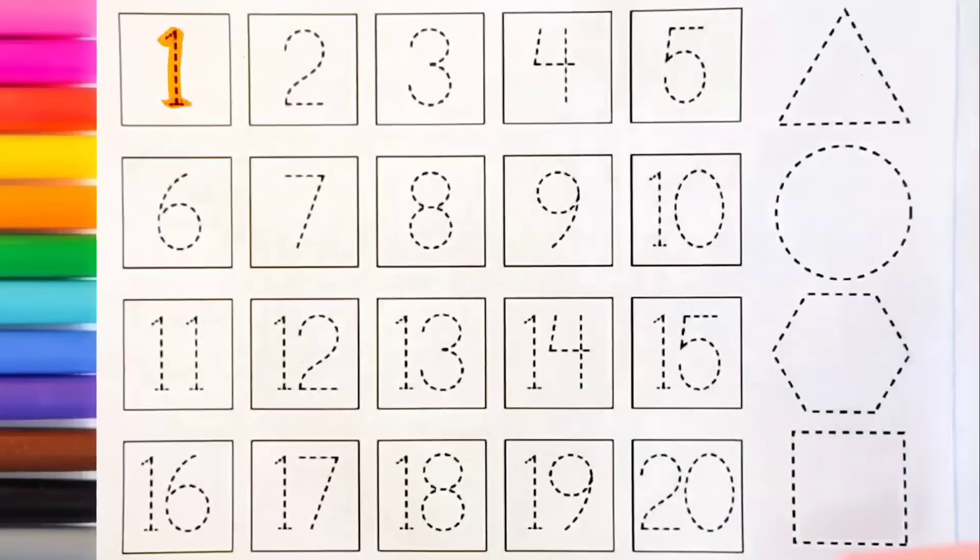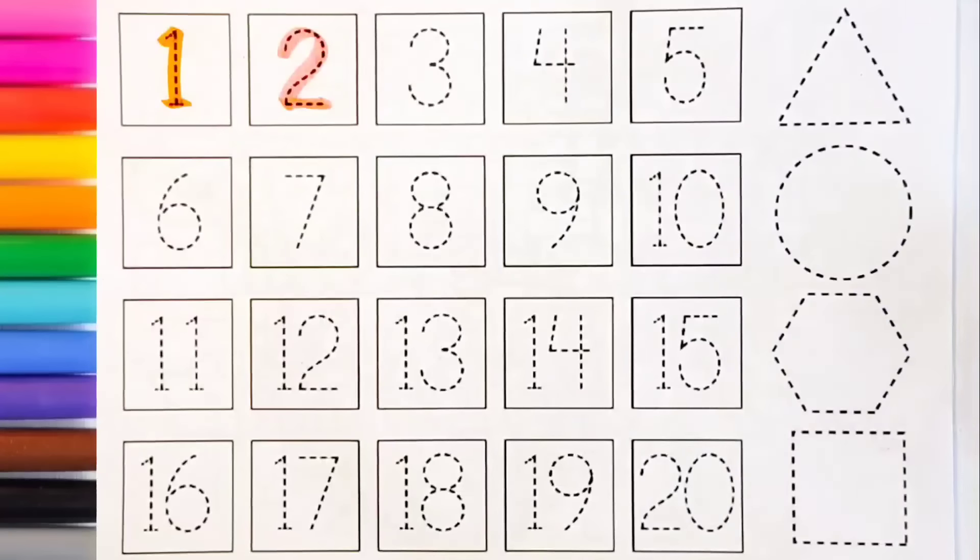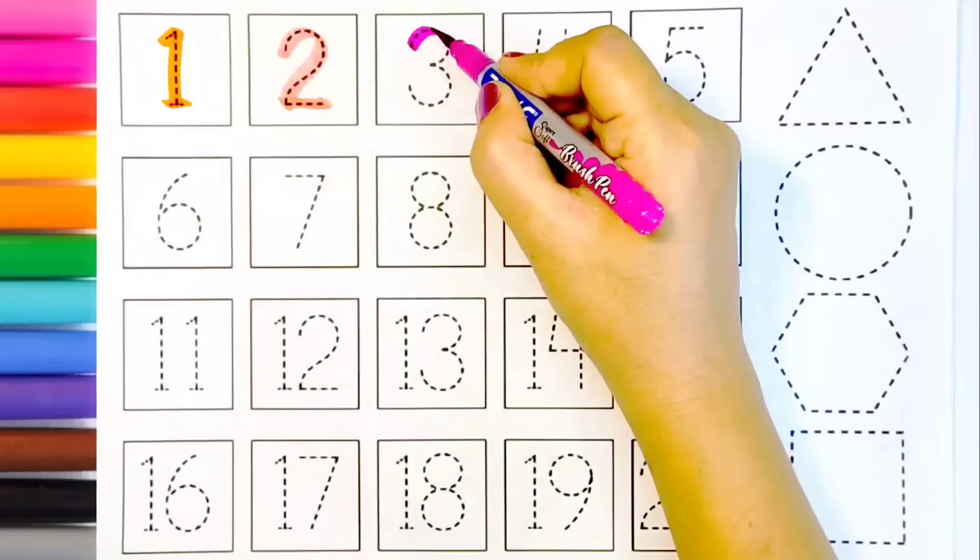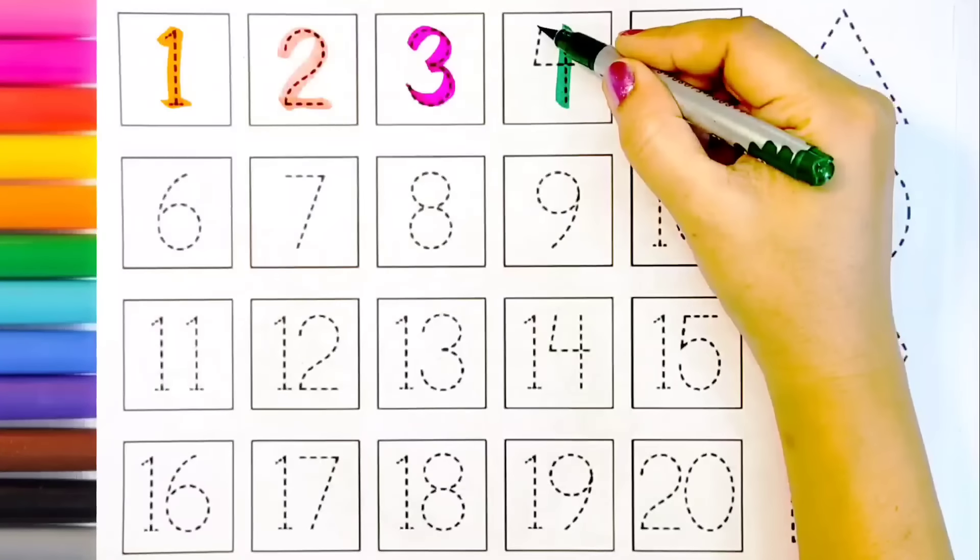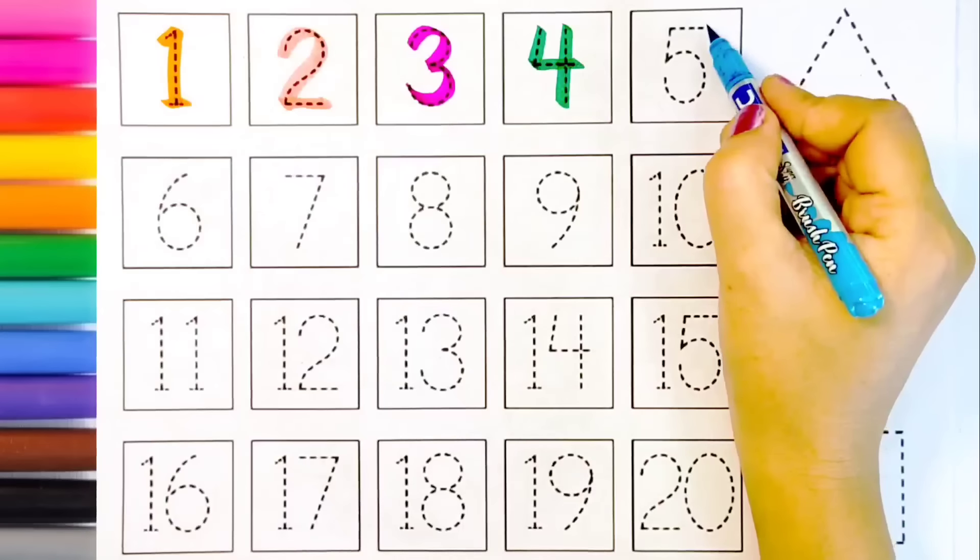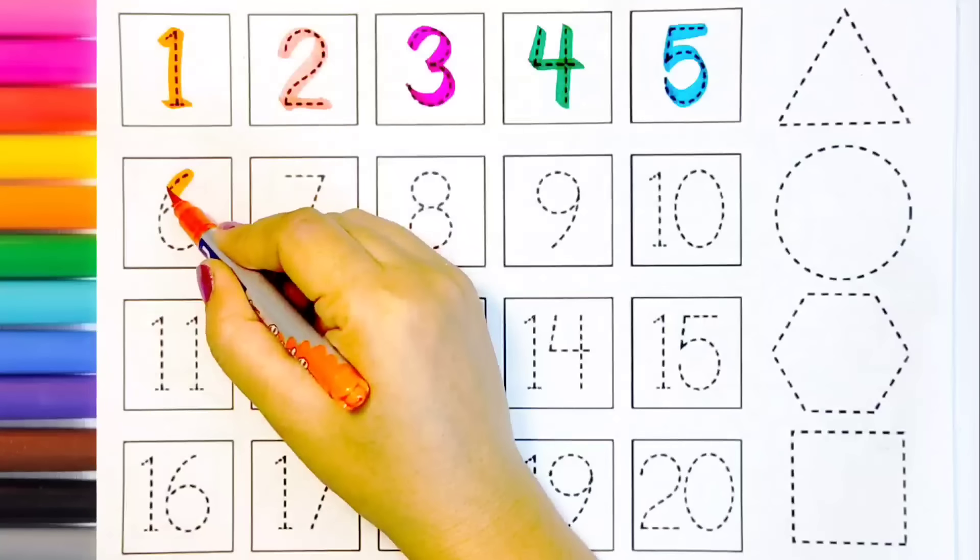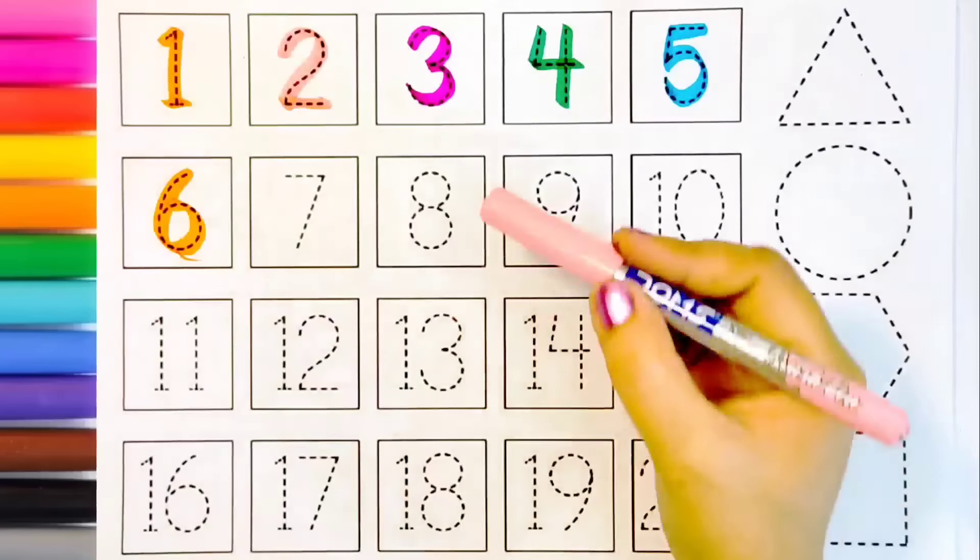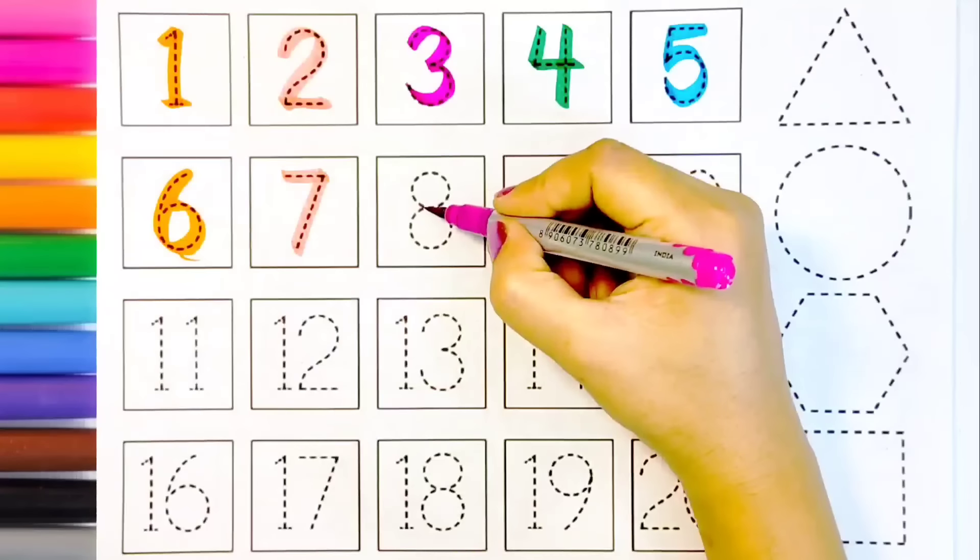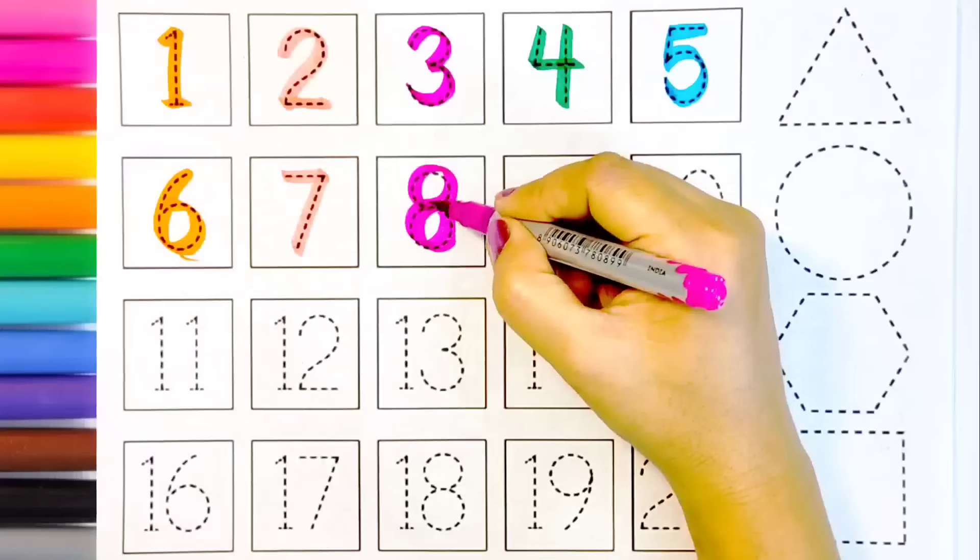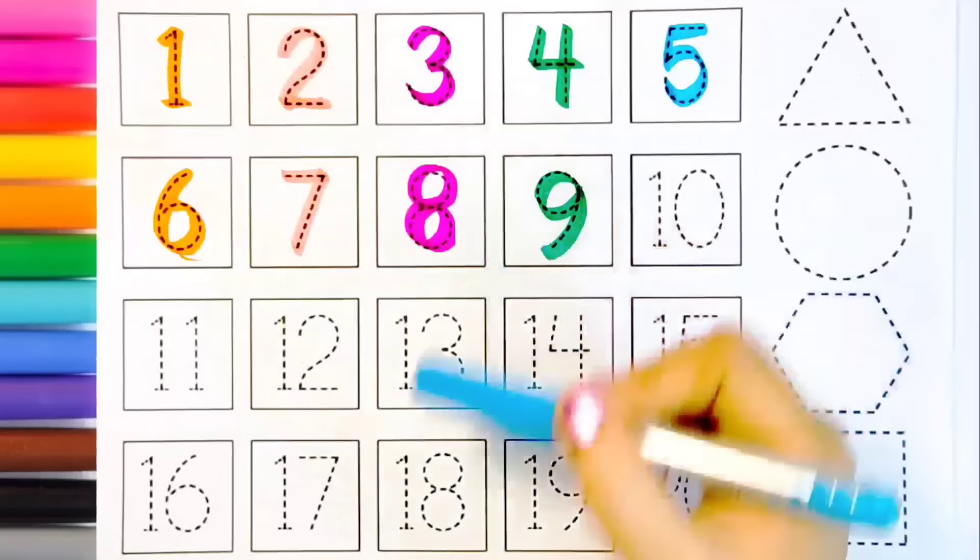Number one, peach pink color. Two, pink color. Three, dark green color. Four, sky blue color. Five, orange color. Six is pink color. Seven, pink color. Eight, dark green color. Nine, sky blue color.